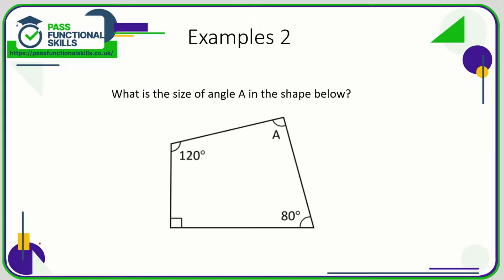Let's take a look at some more examples. In this diagram here we have a four-sided shape, a quadrilateral, and a key property of quadrilaterals is the angles add up to 360 degrees. Now this angle here, that symbol represents a right angle, so that is 90 degrees.